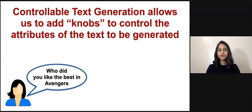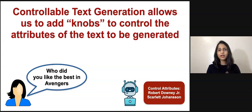For example, if the user asks who did you like the best in Avengers, the bot can decide to hallucinate this information, or we can provide control attributes like Robert Downey Jr. or Scarlett Johansson to the bot.